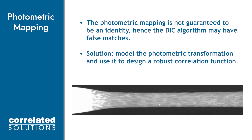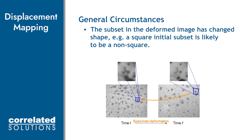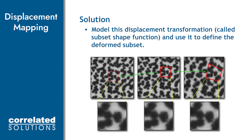In the reference or undeformed image, the subset drawn is a square. However, as the specimen deforms, the subset does not remain a square. So in the correlation function, we account for a subset shape function which allows the subset to change shape as it deforms.